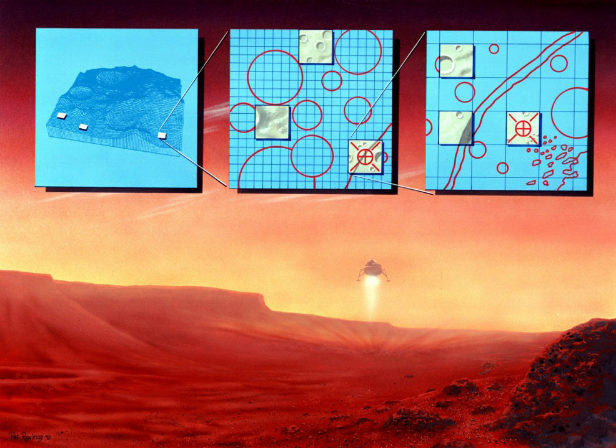A stationary lander can drop from the parachute back shell and ride retrorockets all the way down, but a rover cannot be burdened with rockets that serve no purpose after touchdown.